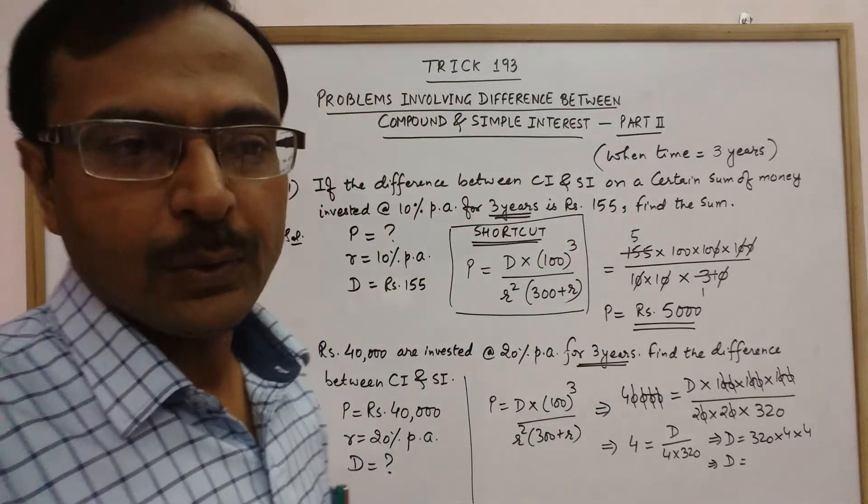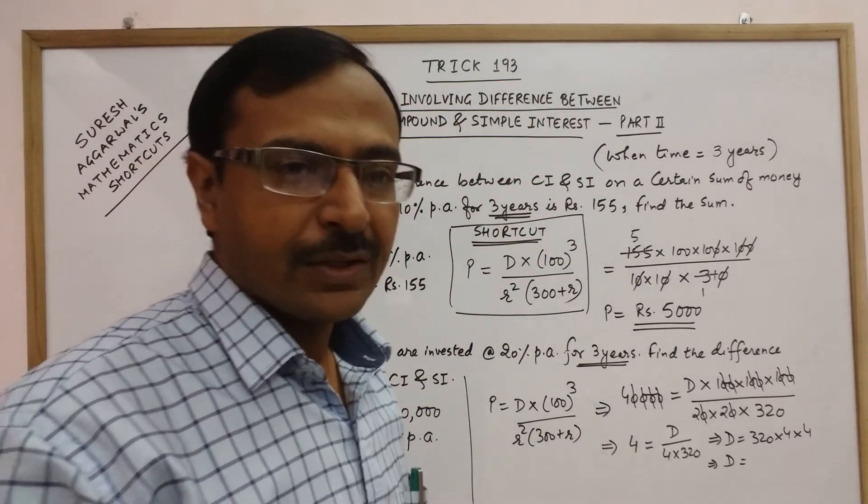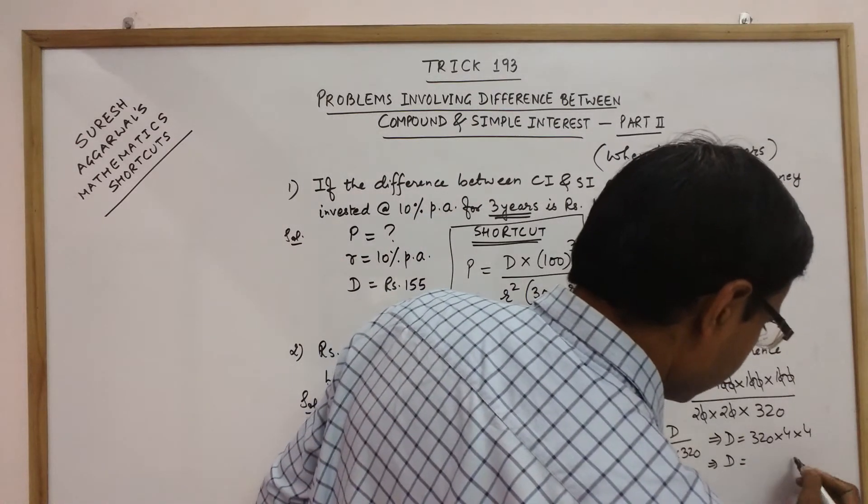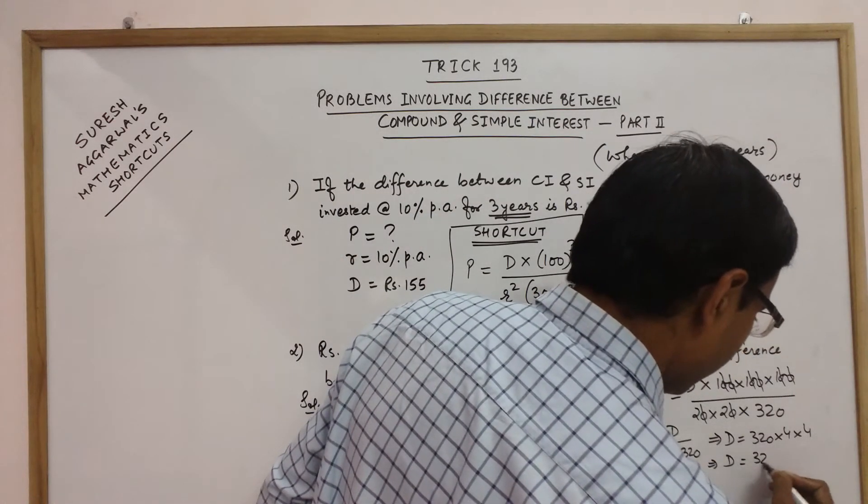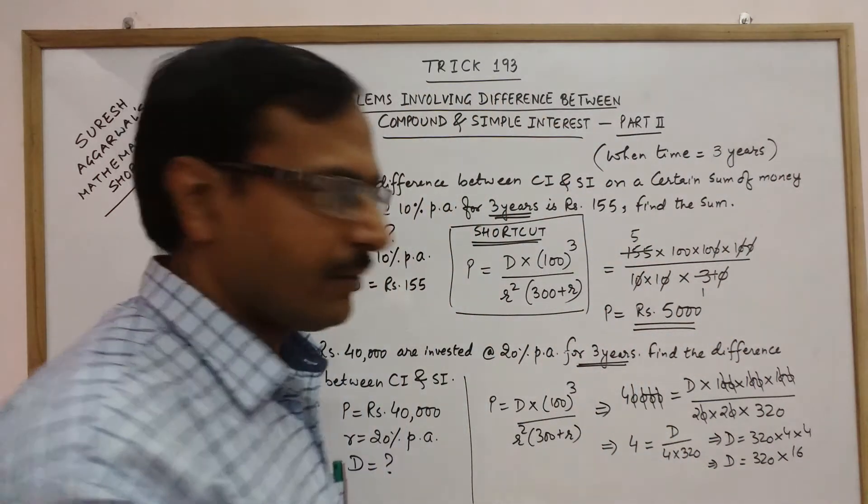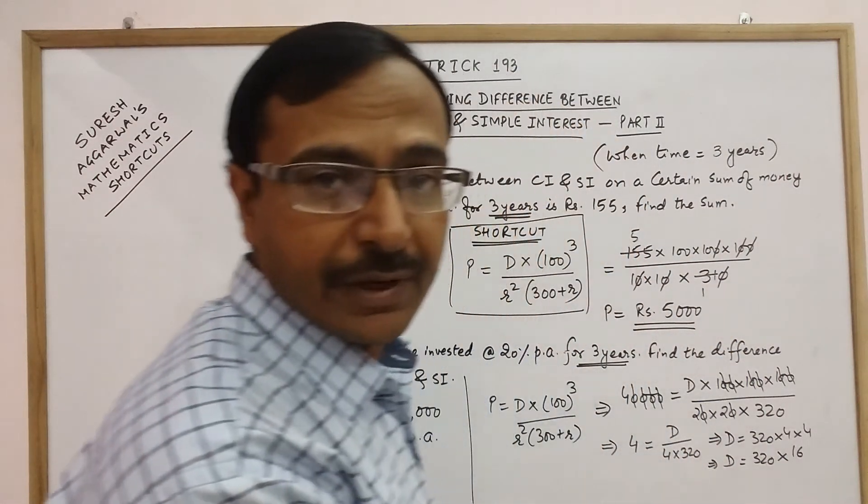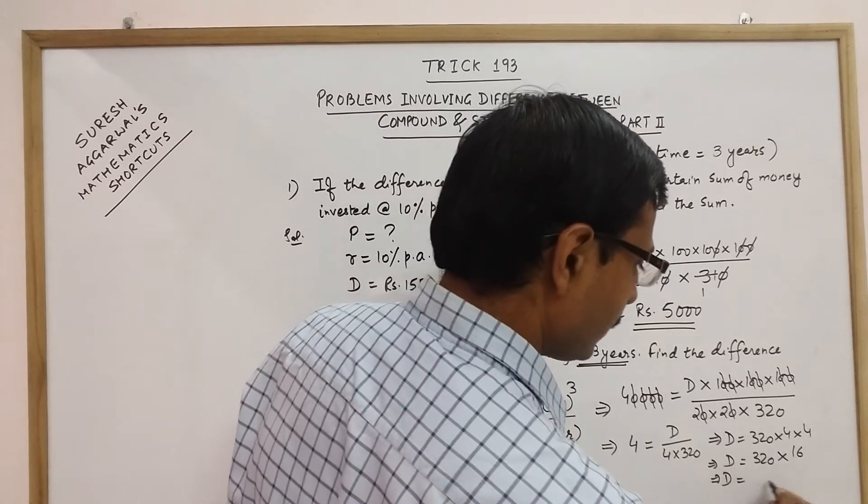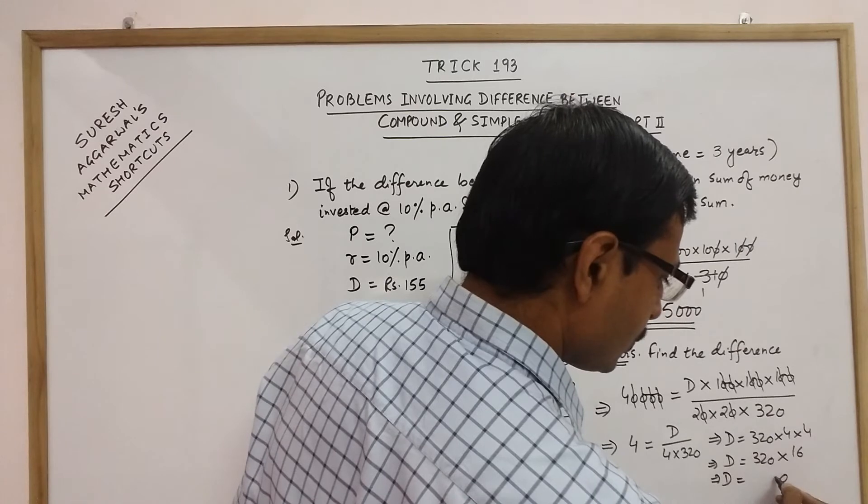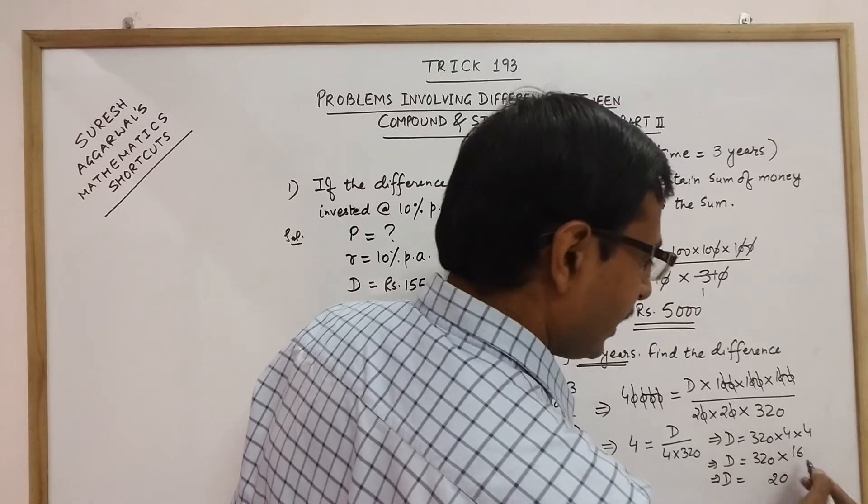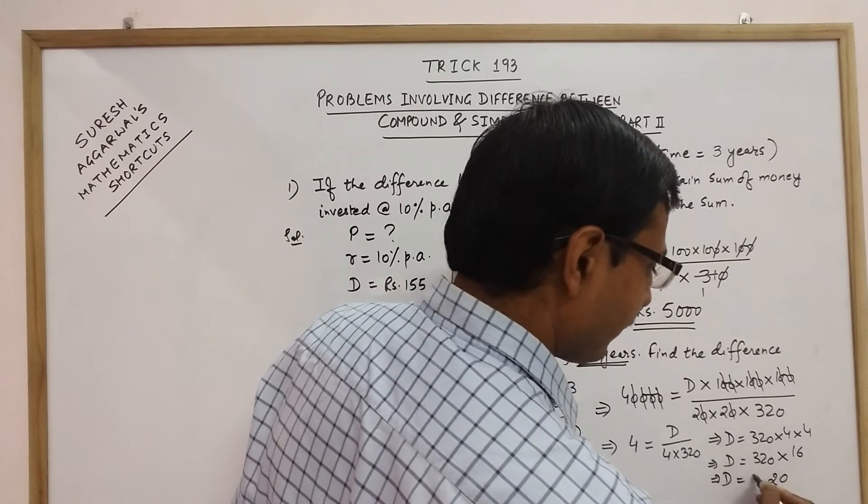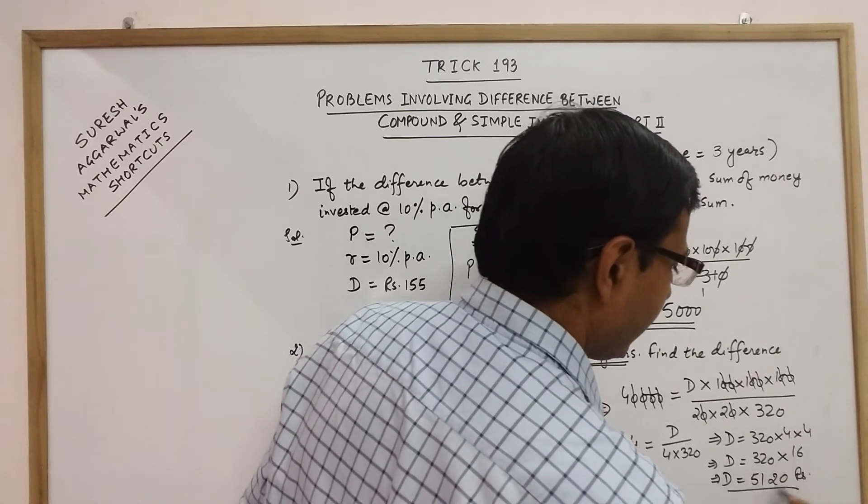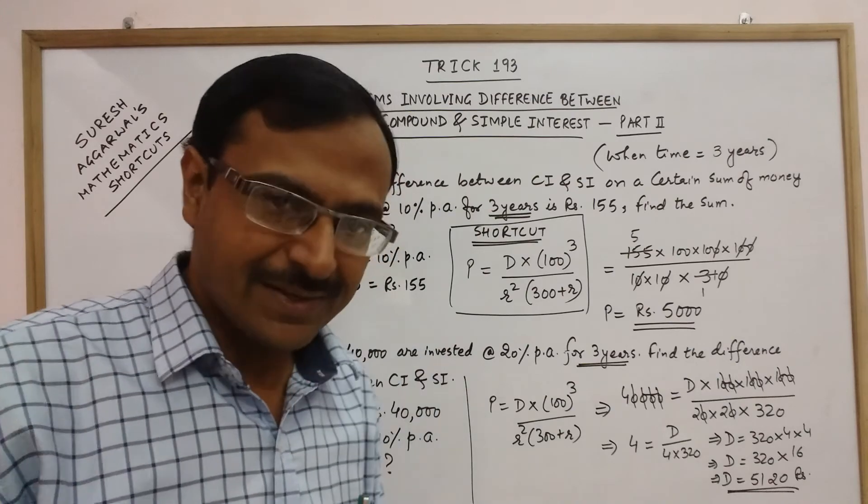A small calculation and you get your result here, 320 into 4 into 4, so 320 into 16. And when you solve this you will get your final result. That is D equal to, 16 to the 32, so you have 2, 3 carry and 16 times 3 is 48 plus 3 is 51. So 5120 is the difference between CI and SI.